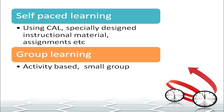Learning in an enabling environment can be self-paced learning using CAL and specially designed instructional materials, assignments, etc., aimed at a particular child's need. Another type is group learning, which is activity-based and occurs in small groups — and this is what we are focusing on in today's lecture.